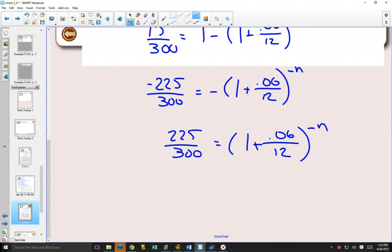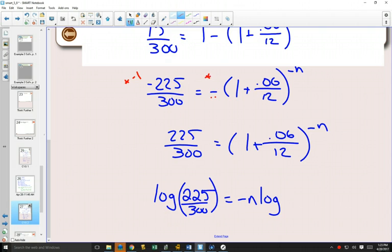Now that we've done that, we can take the log or the natural log of both sides. And that negative N could come out in front. Right here. What I did is I multiplied both sides by a negative to make it positive to get rid of this negative sign here. I multiplied both sides by a negative 1 to make it positive. And then that'll make the 225 over 300 positive as well.